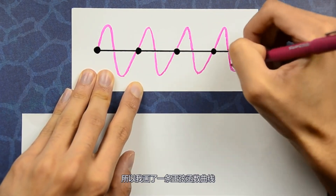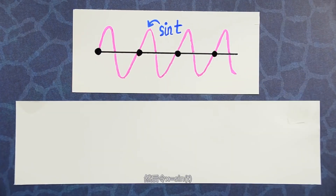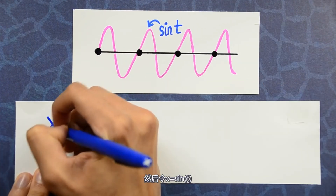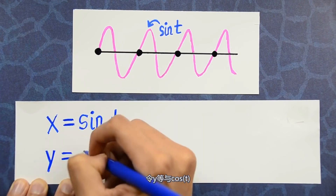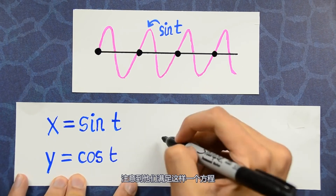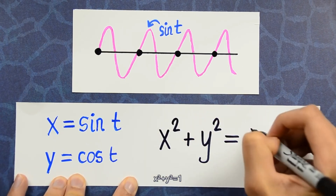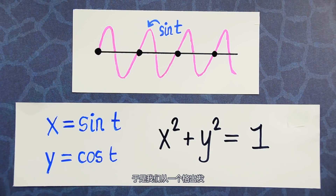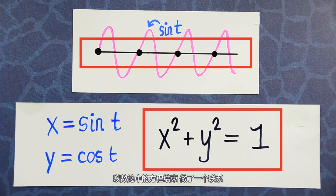What we've drawn is the sine function — it's periodic. Then set the variable x to equal sine of t, and set the variable y to equal cosine of t. Notice that they satisfy the following equation: x squared plus y squared equals 1. So we started off with a lattice and ended up with an equation, which lives in the world of number theory.